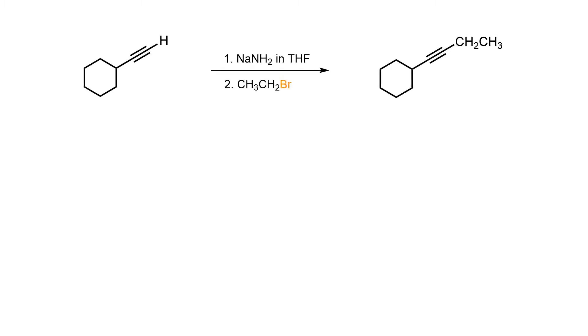Since terminal alkynes have a pKa of approximately 25, it is possible to alkylate using a sequence of deprotonation and alkylation. This results in a chain elongated internal alkyne product.